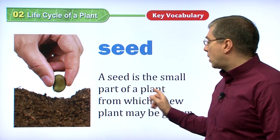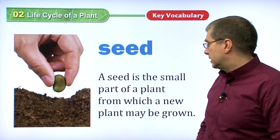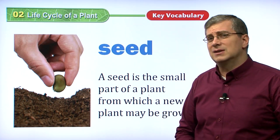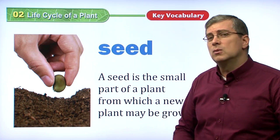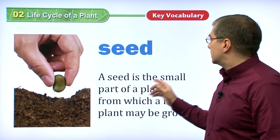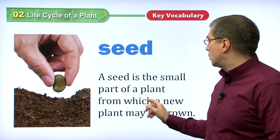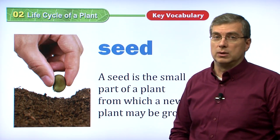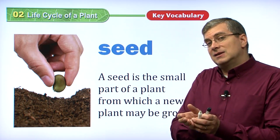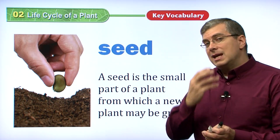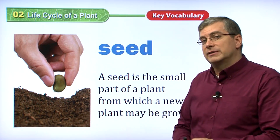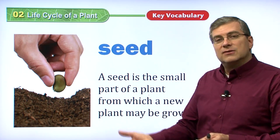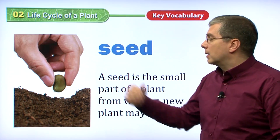The seed is the small part of a plant. Remember what makes the seed? That's right — fruit. Inside the fruit we have seeds. So the seed is a small part of a plant from which a new plant may be grown. The fruit that contains seeds, when we eat it, or the fruit is carried along by something else like an animal, they open up, the seeds fall out, and then they will grow again.